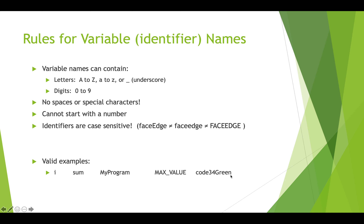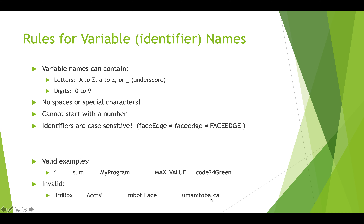These examples are not valid and Processing will not allow them: '3rdBox' because it starts with a number; 'account#number' because it contains a special symbol; 'robot face' because it has a space — you're not allowed spaces in variable names; and 'umanitoba.ca' because it contains a period, which is a special character not allowed in variable names.